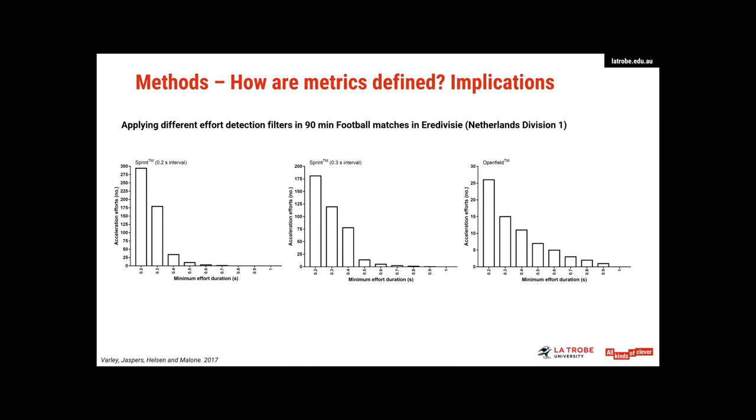So you can see that there's three different graphs on the screen, which all have the number of acceleration efforts detected on the y-axis and a range of minimum effort durations along the x-axis ranging from 0.2 through to one second. In regards to data filtering, the graph on the left used the old catapult sprint software, where accelerations were derived from velocity over a 0.2 second interval. The middle graph used a 0.3 second interval, and the right graph used a newer open field software, which actually calculates acceleration using an exponential filter. So if we start off by looking at the effect of different filtering types, and we just pick one of those minimum effort durations, say 0.3 seconds, you can see that the different types of filters each provided very different results in the total number of efforts detected during a game, going from 175 efforts to 120 to 15. So really big differences there.